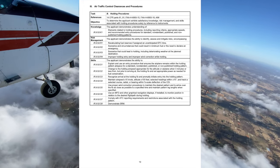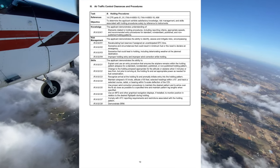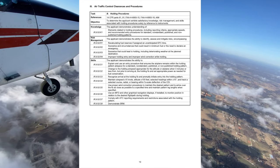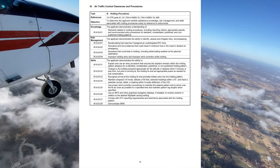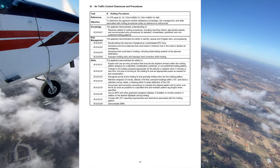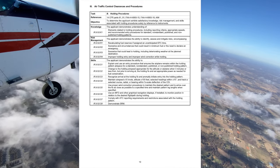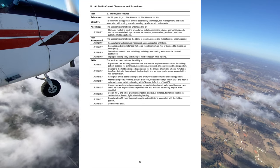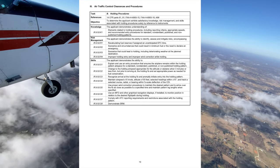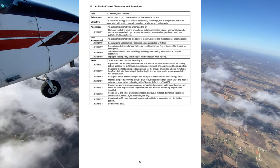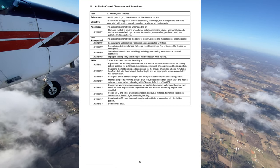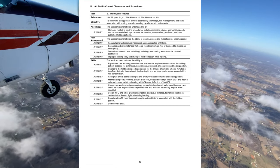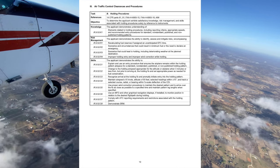Now we're going to get into airplane flight instruments and navigation equipment. We'll go over pitch, bank, and power instruments. Pitch instruments are: airspeed indicator, attitude indicator, altimeter, and vertical speed indicator. Bank instruments are: attitude indicator, heading indicator, and turn coordinator. Power instruments are: airspeed indicator, tachometer, and manifold pressure.